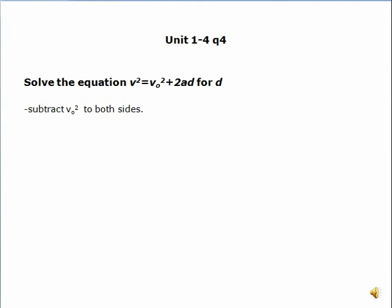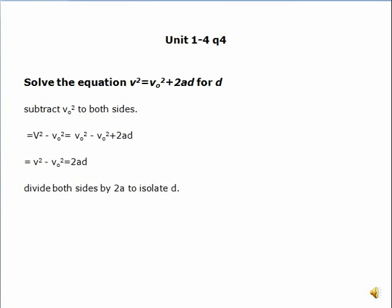So basically, we want to isolate d. To do that, we would first subtract the v-initial squared to both sides.